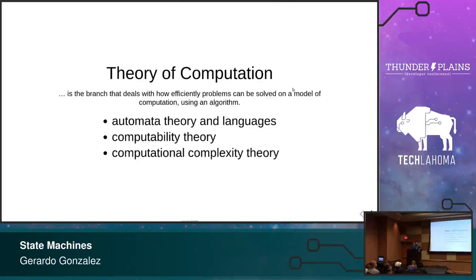That probably meant nothing to you unless you were forced to get a CS degree — and a lot of us web developers did not do that. But you might be familiar with some concepts from here. For example, if you've read that bubble sort has time complexity of O(n²), that comes from computational complexity theory — it's called Big O notation. For this talk we care about automata theory. I'm going to attempt at being entertaining and tell you a story that will hopefully introduce automata theory and a little bit of computability.